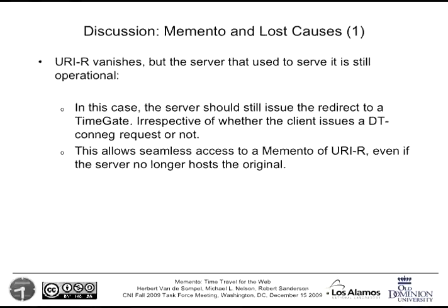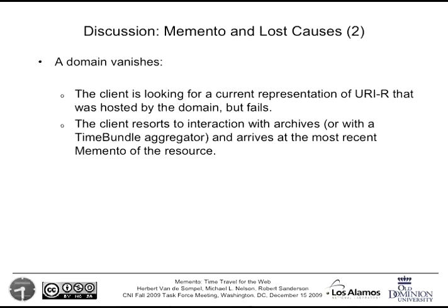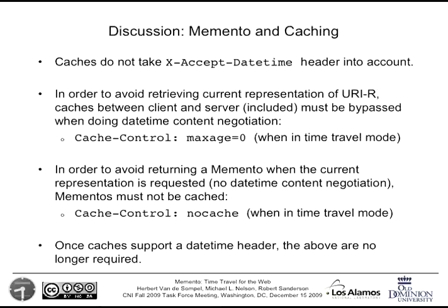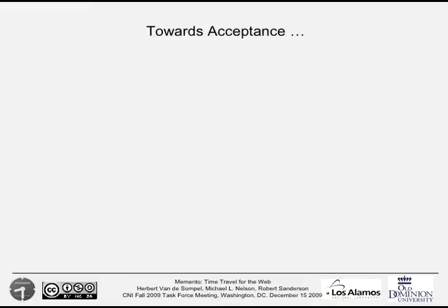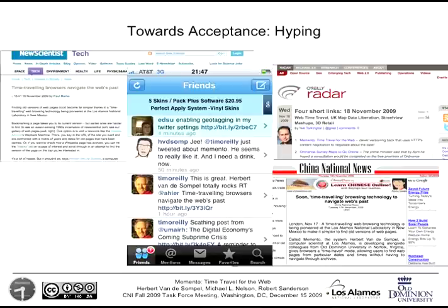Memento has interesting repercussions for web persistence, providing capabilities to handle 404 situations by redirecting to archives. We published our paper on November 6th in the Physics Archive, and an enormous amount has happened since. There's been huge hype on the web, started by a New Scientist article that spread virally — covered in China, India, Thailand, and a tweet from Tim O'Reilly with 1.3 million followers.